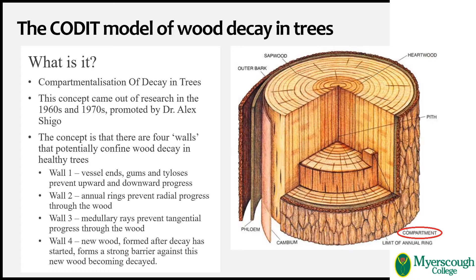Wall one can consist of vessel ends, gums, resins, and tyloses, which are balloon-like structures put out by the ray system that block adjacent dysfunctional vessels and occur in quite a few tree species. Wall two is the annual rings within the wood that act to slow or prevent decay radially into or out of the stem or branch. Annual rings contain late wood that is denser than early wood, and denser wood is generally harder for decay agents to break down.